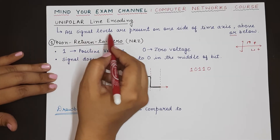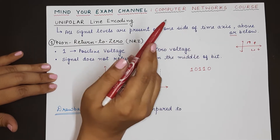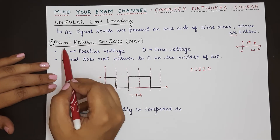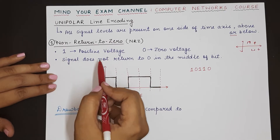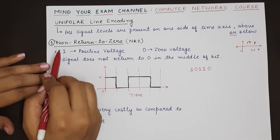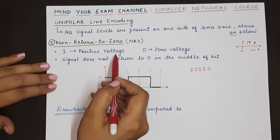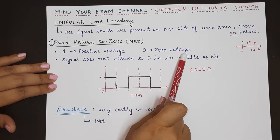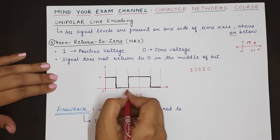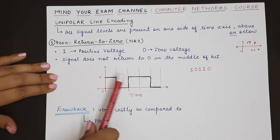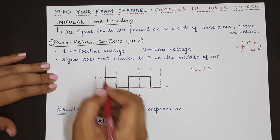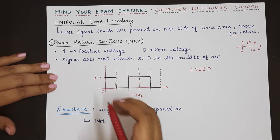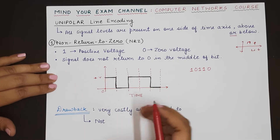All signal levels are present on one side of the time axis. Since unipolar has a subcategory of NRZ (non-return to zero), in this technique if we represent bit 1 we use a positive voltage, and bit 0 is represented with zero voltage. Zero voltage lies on the time axis and positive voltage, denoted by +V, lies above it. So we are only representing the digital signal on one side of the time axis — above.